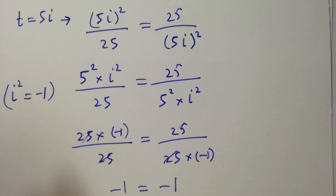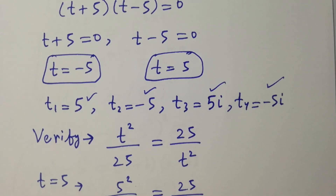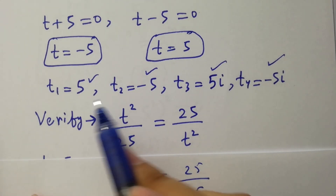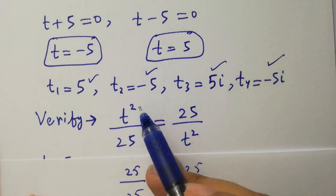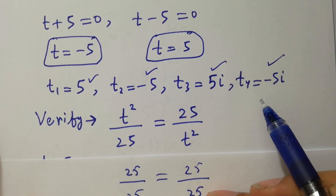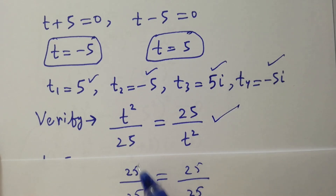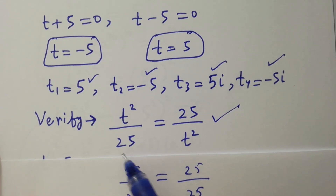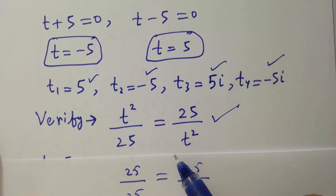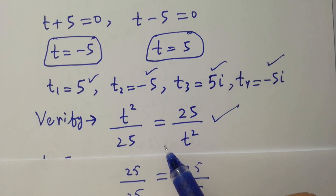This shows that the values t equal to 5, t equal to minus 5, t equal to 5i, and t equal to minus 5i all satisfy the equation t squared over 25 equal to 25 over t squared. Thanks for watching this video. Please subscribe to this channel to get notifications of my new videos.